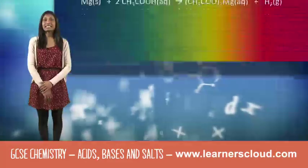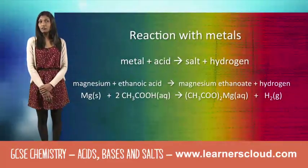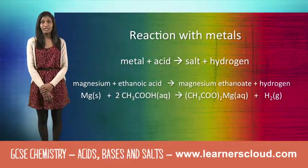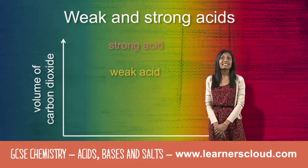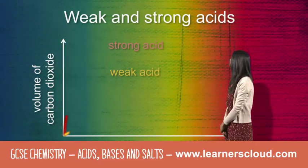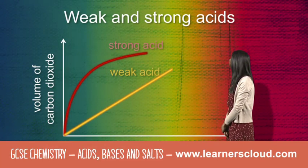Carboxylic acids show the typical reactions of acids. Again, the rate of reaction is slower than seen with a strong acid.